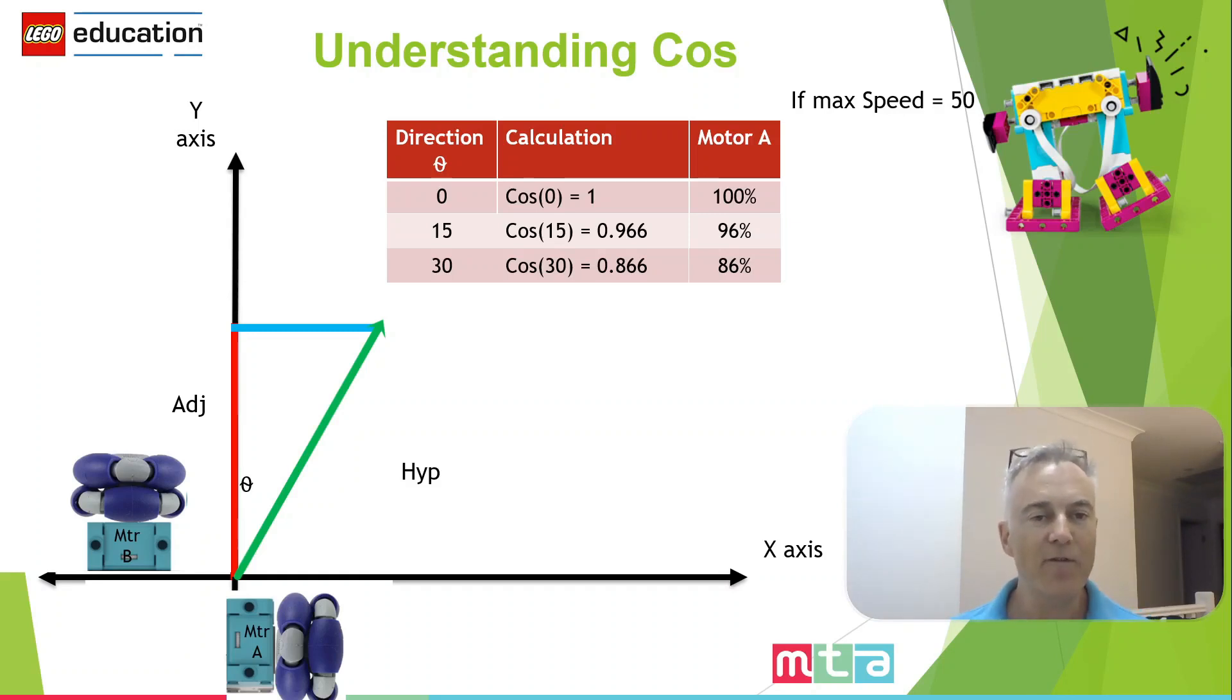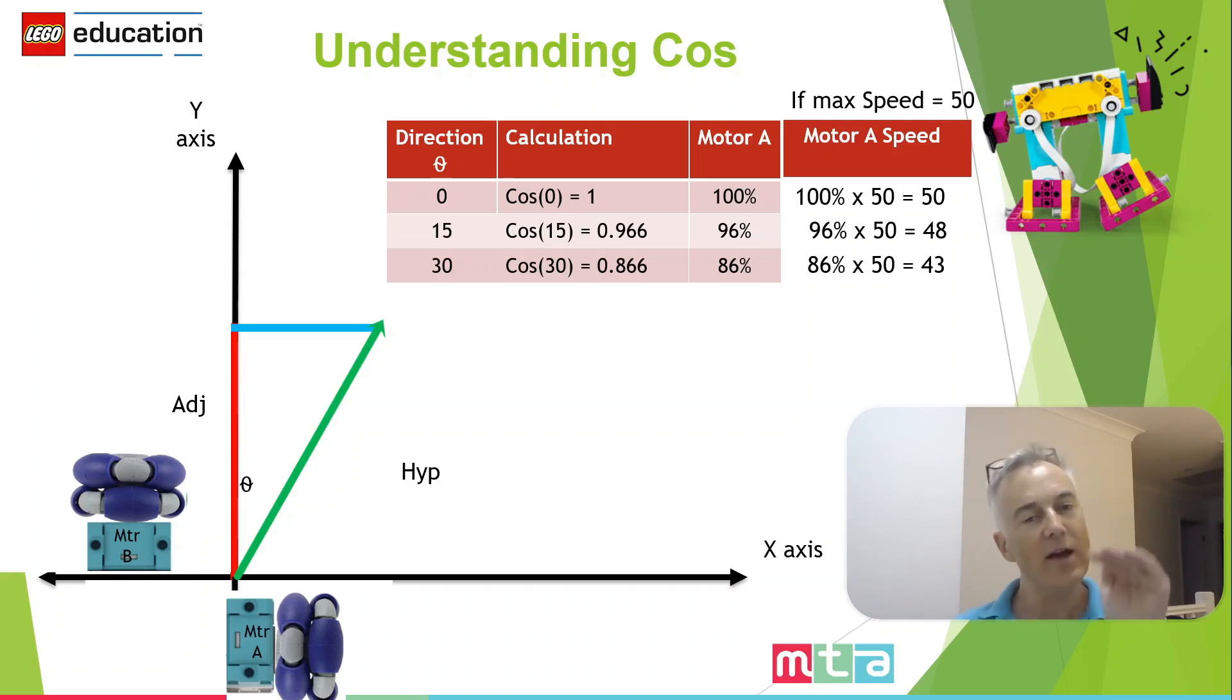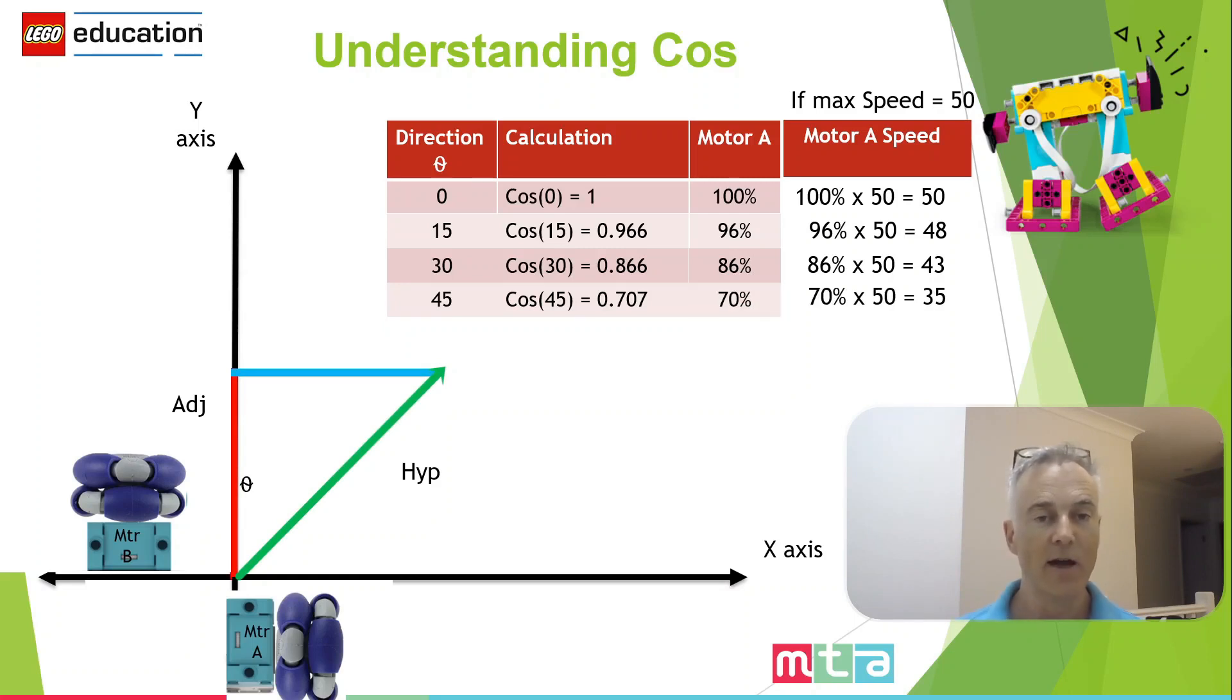Now, what does that look like in practical terms, the calculation we need to make? If we set our maximum speed at 50 for motor A, then the speed when we were going in a direction of zero or north, we'd want our motor A at 50% speed. You can see there 100% times 50. And when we were travelling at 15 degrees, we'd get a value of 96. So we want our 96 times our maximum speed of 50 equals 48. And then at 86 times 50, you can see our speeds are starting to drop down as our angle gets large, as we move more towards that 90 degrees. And at 45 degrees, you can see the cos 45 gives us a 0.7 rating, which is 70%. And that would be 70% of that maximum speed that we're travelling.